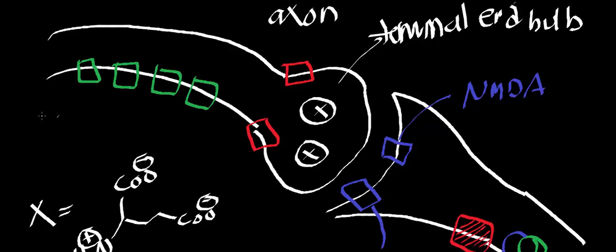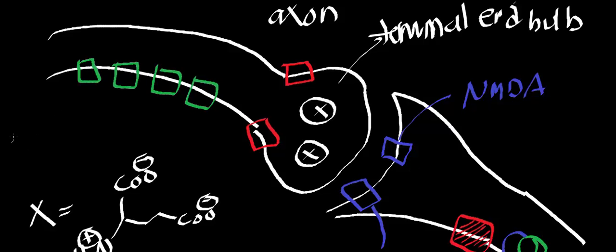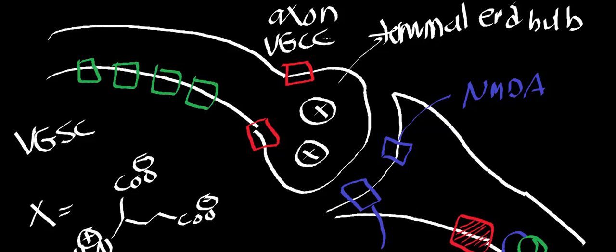These green proteins are supposed to be voltage-gated sodium channels. These red ones are going to be voltage-gated calcium channels.